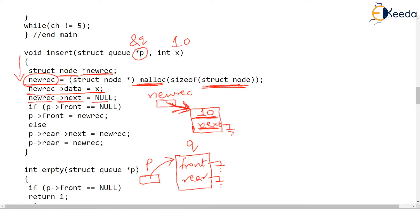This is a queue we are creating, and this is the first person joining the queue — person 10. Will 10 have anybody standing behind them? Obviously not. So next pointer has to be null. Now we ask a simple question: is P arrow front currently null? Yes — we made it null to begin with in main. So this condition holds true and else will not run. The line P arrow front equals new_rec executes, meaning front should point to exactly the same node where new_rec is pointing. Since new_rec points to 10, front also points to 10 — front is no longer null.